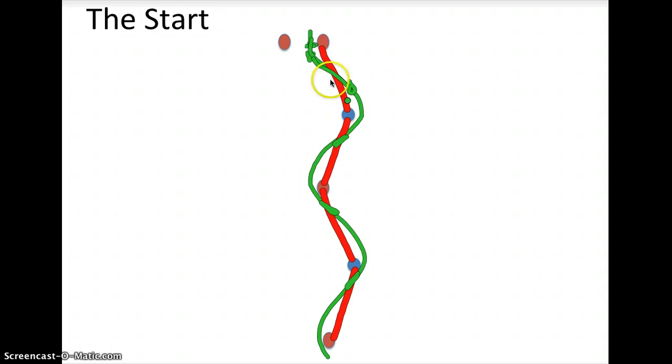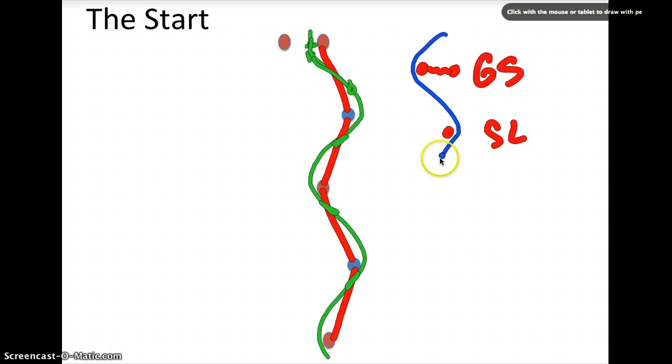The only difference is, whereas a giant slalom gate consists of two sticks with a cloth panel between them, in slalom you just have a single pole. So you would go around that pole. That's the difference. You have a colorful panel here in giant slalom and no panels in slalom. This really is what gives the skiers the opportunity to run down the gates.